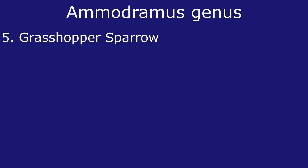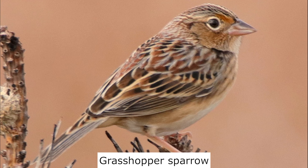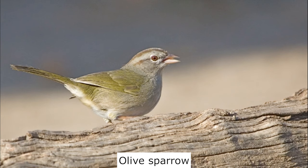The sparrow in this genus is not likely to be found with house sparrows because they do not share the same habitat. The grasshopper sparrow is found in grasslands across the United States and southern Canada. The olive sparrow is found in extreme southern Texas in thorn scrub and is also not likely to be found with house sparrows due to habitat differences.